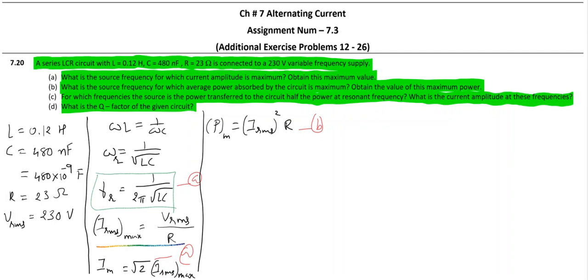Let us move to C. For which frequency of the source is the power transferred half? Now here you will have to recall the theory a little bit. We know that in the resonance curve, the resonance curve is a plot in which we have I_rms on vertical axis and omega on horizontal axis, and the graph goes like this.